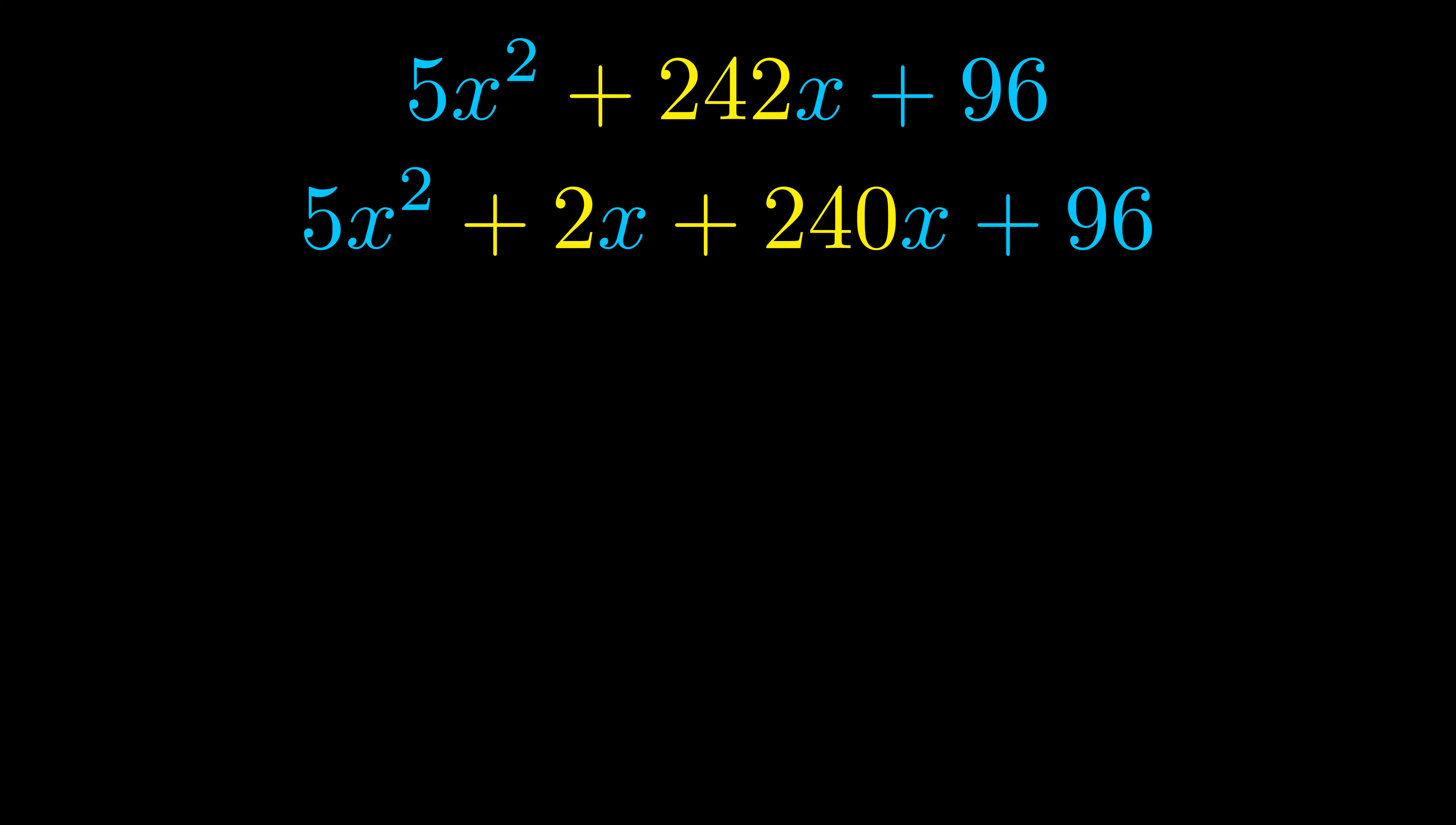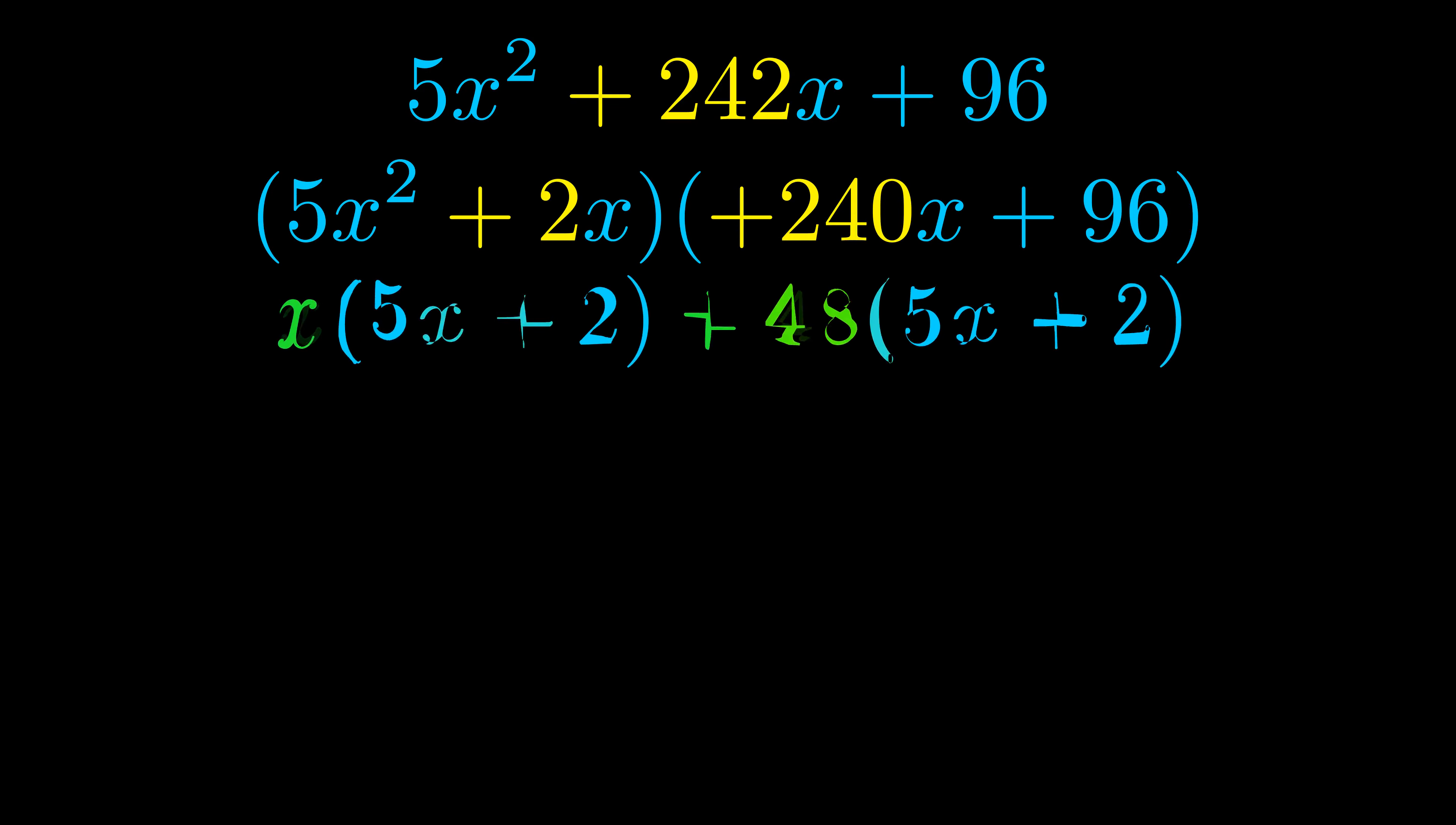Once we've done this, we go ahead and put parentheses around the first term and the last term. And we do that so that we can take the greatest common factor out of both terms. We can see the greatest common factor is now outside in green. Notice also how what remains inside of the parentheses is the same in both cases.